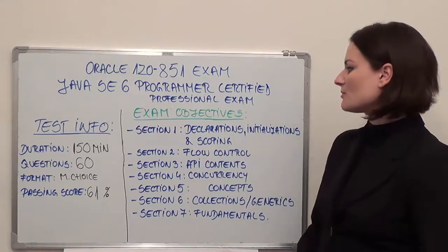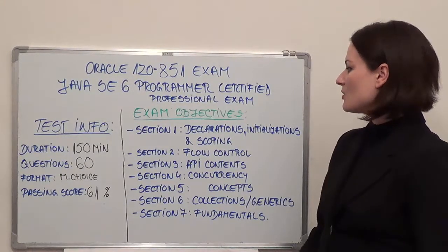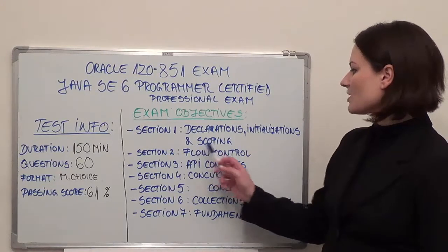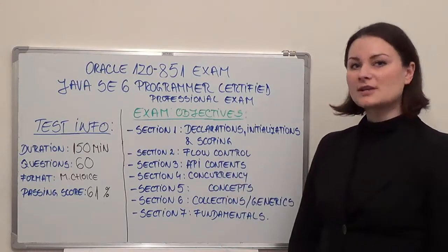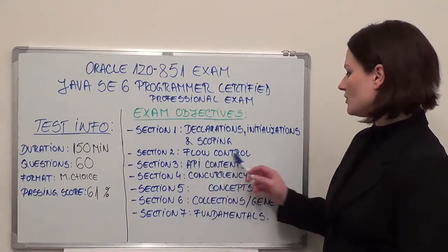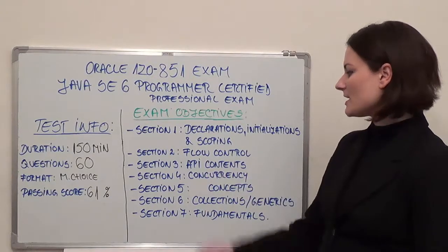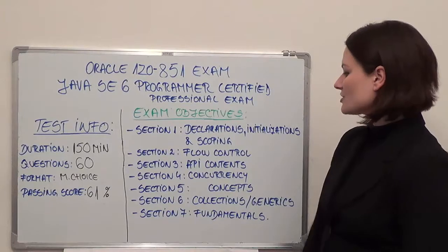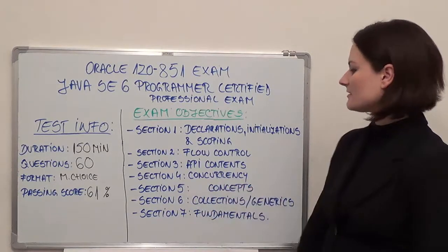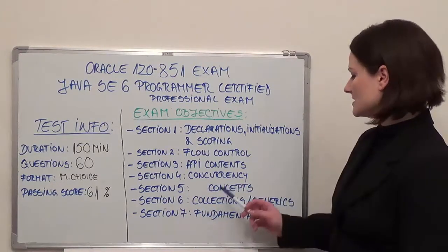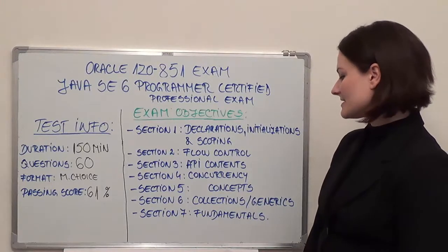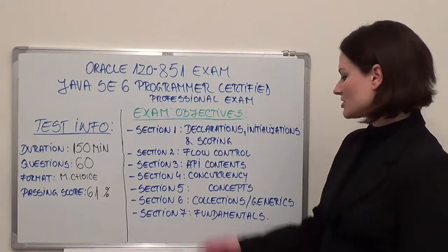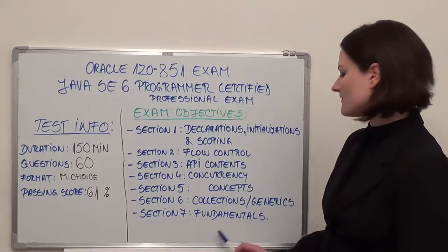Section one is Declarations, Initializations and Scoping. Section two is Flow Control. Section three is API Contents. Section four is Concurrency. Section five is Concepts. Section six is Collections/Generics, and finally section seven is Fundamentals.